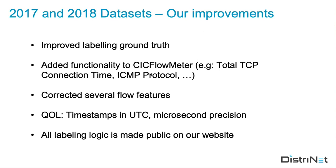To improve the dataset, we first tried to improve the labeling ground truth, aiming to give every single flow a correct label. We also added functionality to the CICFlowMeter tool, such as adding features like the total TCP connection time, adding the ICMP protocol, and correcting some issues with flow features. We added quality-of-life changes like timestamps with microsecond precision, because in the previous datasets timestamps were either in minutes or seconds, which is not granular enough when analyzing DDoS attack traffic where flows are very closely grouped together. Finally, we made everything public on our website.